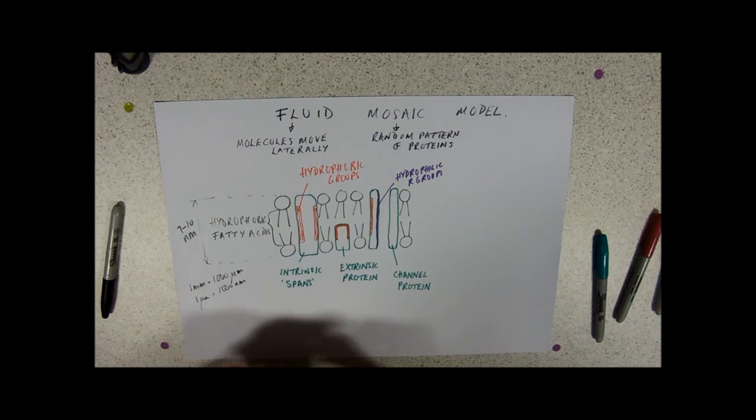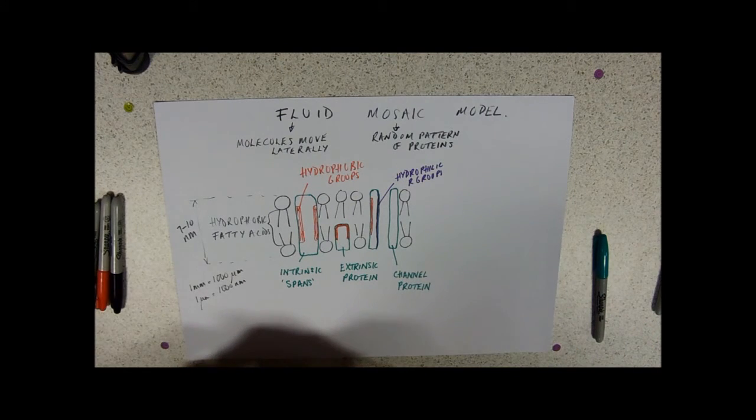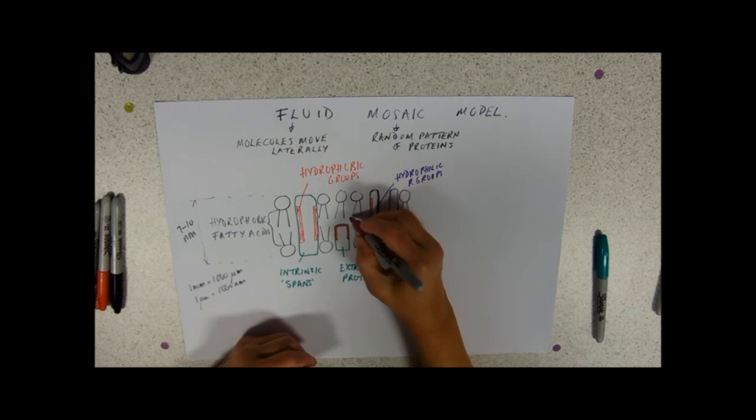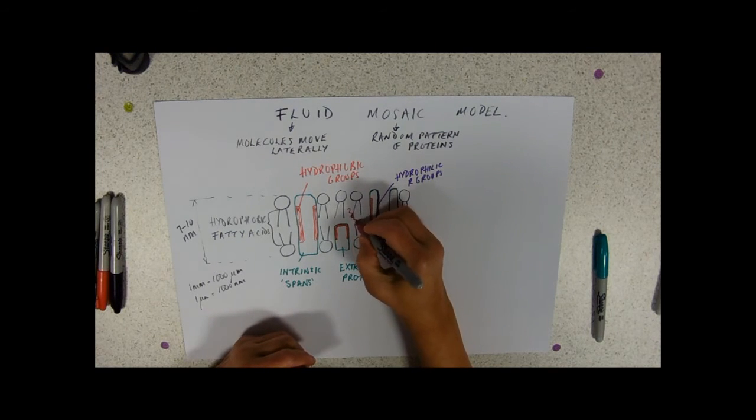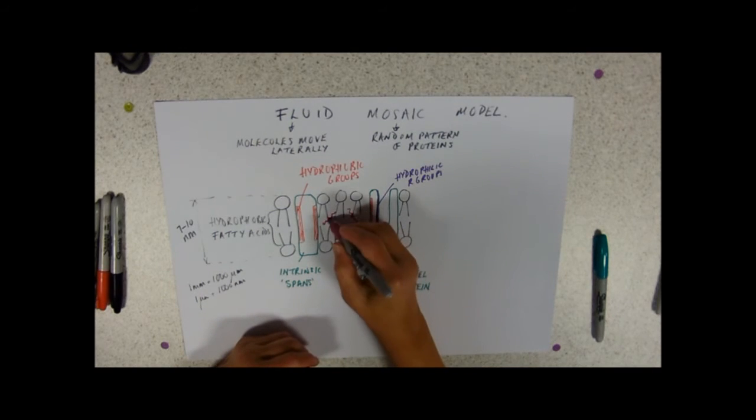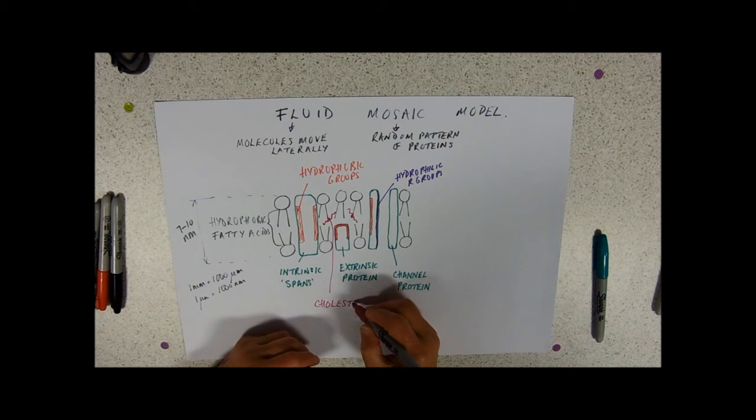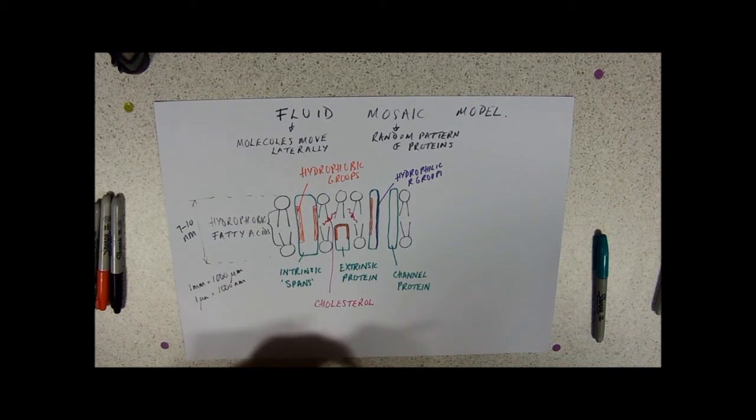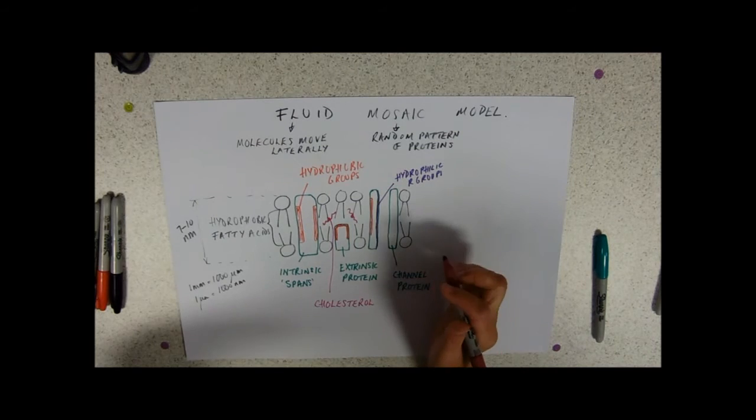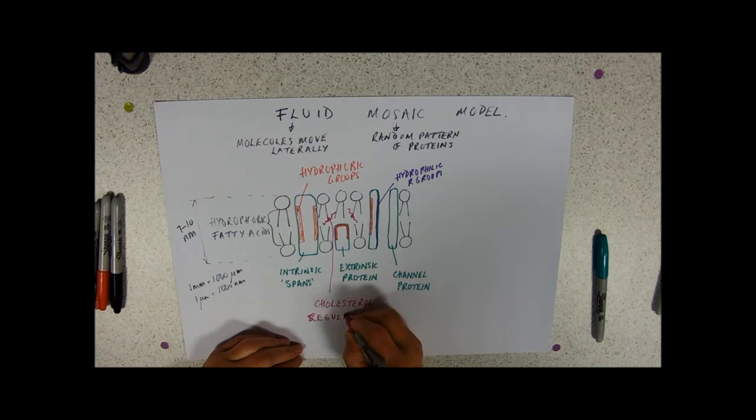So, I said that the membrane is a bit like an oil and it will flow. And the reason that it doesn't kind of flow away, if you like, is that it has little molecules of cholesterol. And what cholesterol does... Cholesterol is a type of lipid-based thing. So, it will interact very happily with that hydrophobic fatty acid tails. And its job is to regulate fluidity.